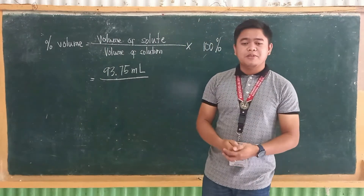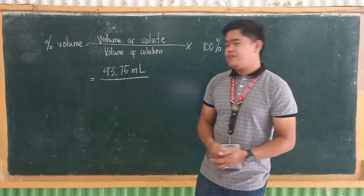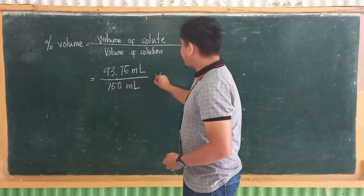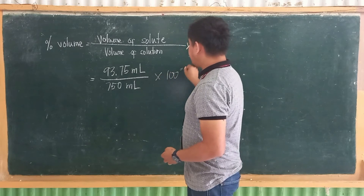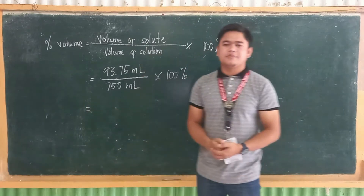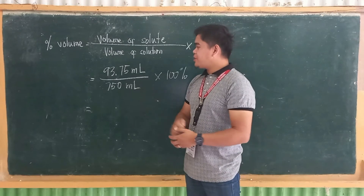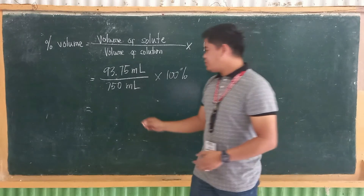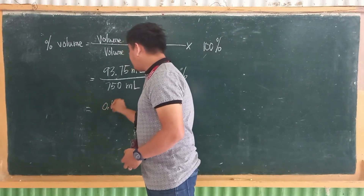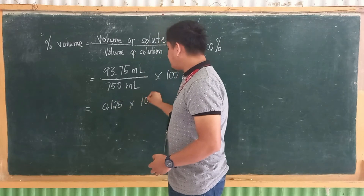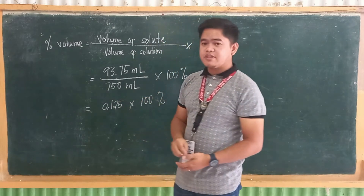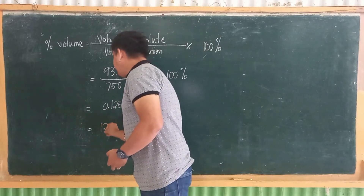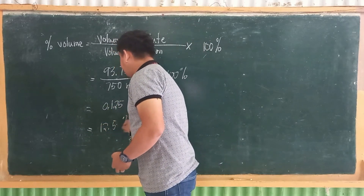Divided by the volume of solution, which is 750 ml, multiplied by 100%. So let's do the math. 93.75 divided by 750 is equal to 0.125. Multiplied by 100 to get its percentage. So the answer is 12.5%.